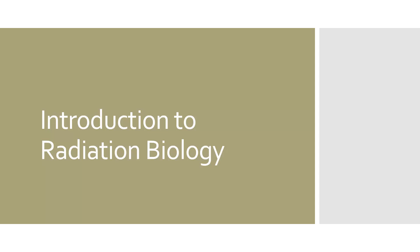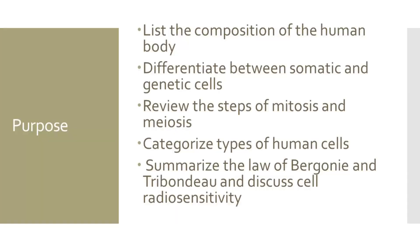In this series of videos, we will review the basics of radiation biology, including how ionizing radiation affects cells and the overall organism. In this first video, we will introduce concepts related to radiation biology by first listing out the basic composition of the human body. Next, we will differentiate between somatic and genetic cells, review the basic steps of mitosis and meiosis, categorize types of cells, and summarize the law of Bergonié and Tribondeau and discuss cell radiosensitivity.